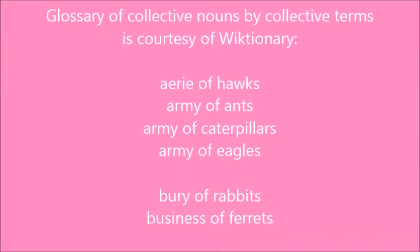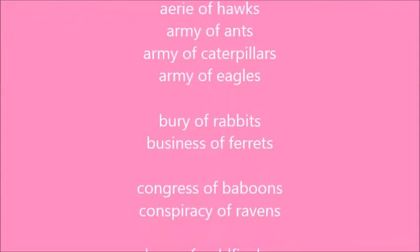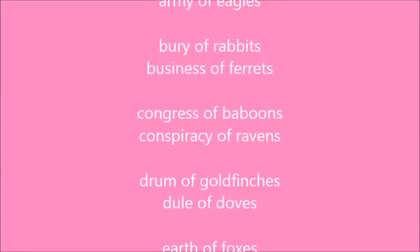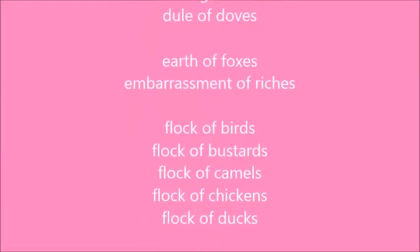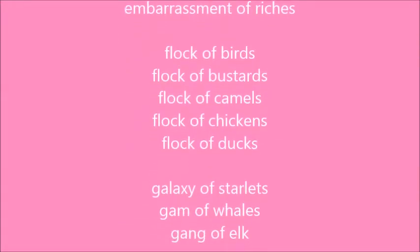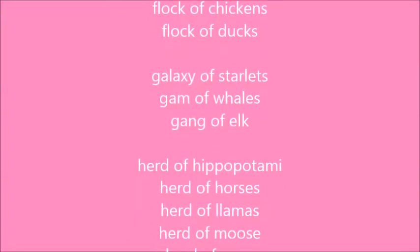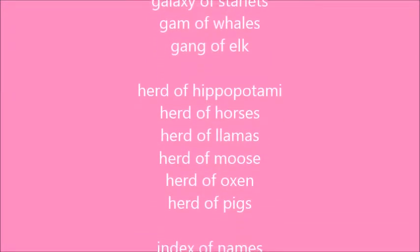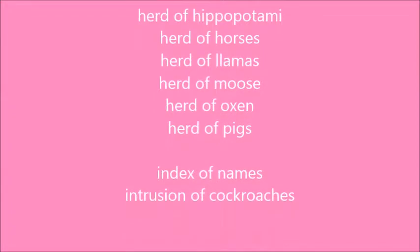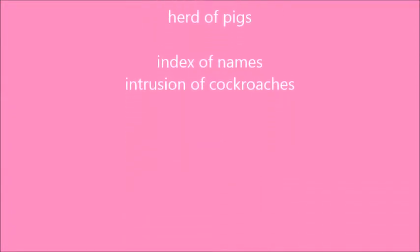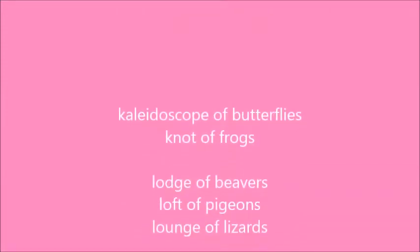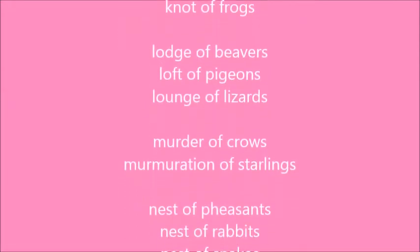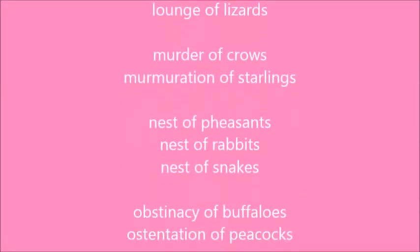These are just some examples. An aerie of hawks. A business of ferrets. A jewel of doves. An embarrassment of riches — wouldn't that be nice? Look at all the different ones we have for 'herd'. An intrusion of cockroaches. Some have very obscure names: a kaleidoscope of butterflies. A murder of crows.